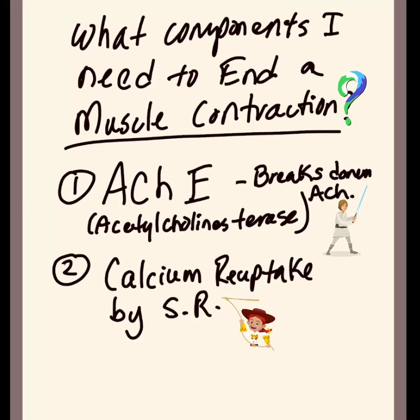So let's dive into the steps to end a muscle contraction. But first, what components do I need to end muscle contraction? The first one is going to be AChE - we're going to need acetylcholine esterase, which breaks down ACh. And two, we're going to need a calcium reuptake by the sarcoplasmic reticulum.